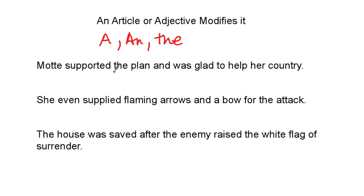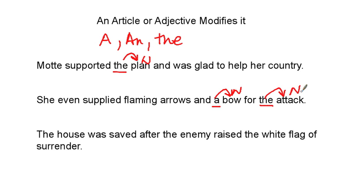The article 'the' — and that's it in this sentence. So what is this modifying? 'The' is modifying 'plan.' We know that 'plan' is a noun. Let's look at the next sentence. We have 'a' and 'the.' So 'a' modifies 'bow,' making that a noun. And 'the' modifies 'attack,' making that a noun. We also have 'flaming,' which is an adjective modifying 'arrows' — noun. So we have three nouns identified simply because there is an article or an adjective modifying them.